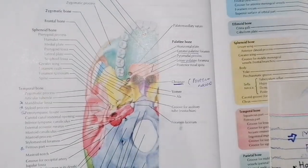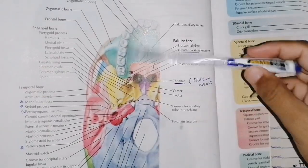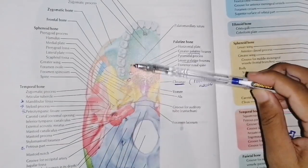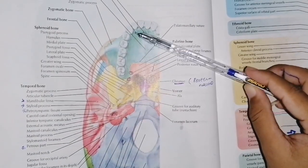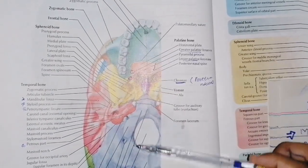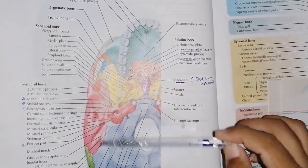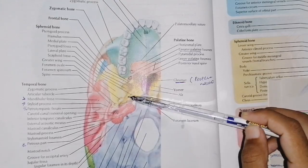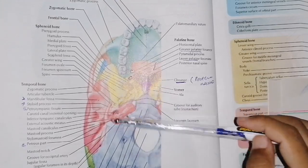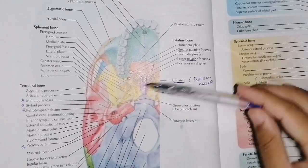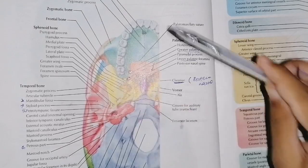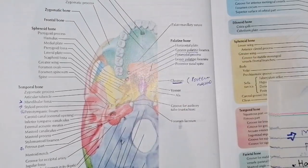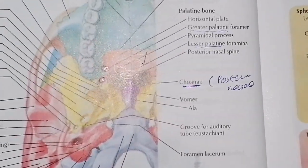Now we will discuss the base of skull — the anterior portion of the skull, the posterior portion, and the medial portion. We will discuss the entire portion of the skull. First of all, the base of the skull — the anterior portion. The anterior portion of the skull involves only 4 things.